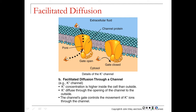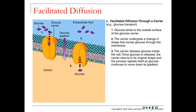Facilitated diffusion is still a passive process, but it needs the help of a channel protein. It can also use a carrier protein — in this case, glucose. Glucose wants to come into the cell, so it binds to the glucose carrier molecule. That's going to cause a conformational change within the carrier protein, allowing that glucose to be transported into the cell.